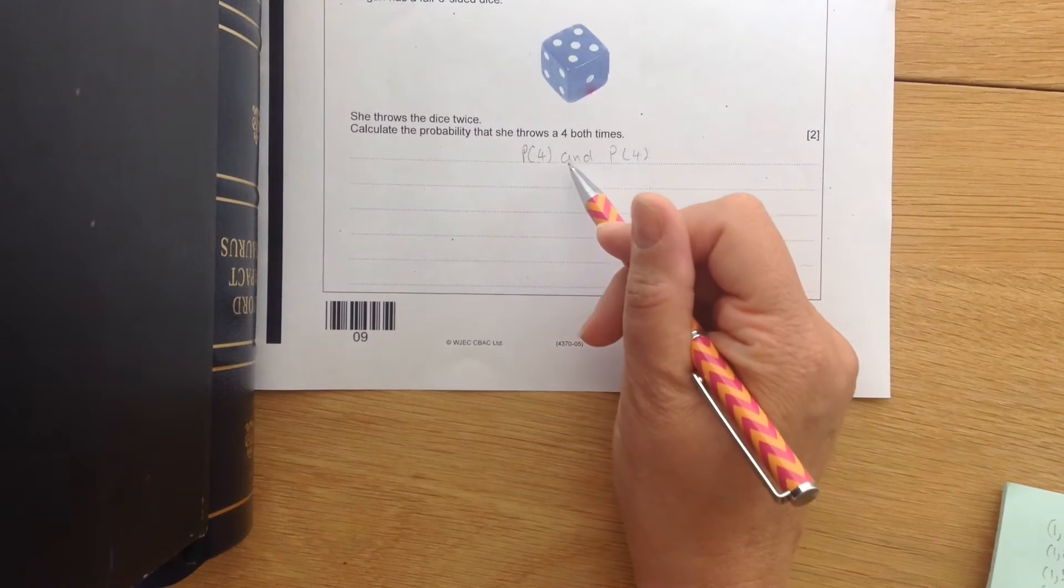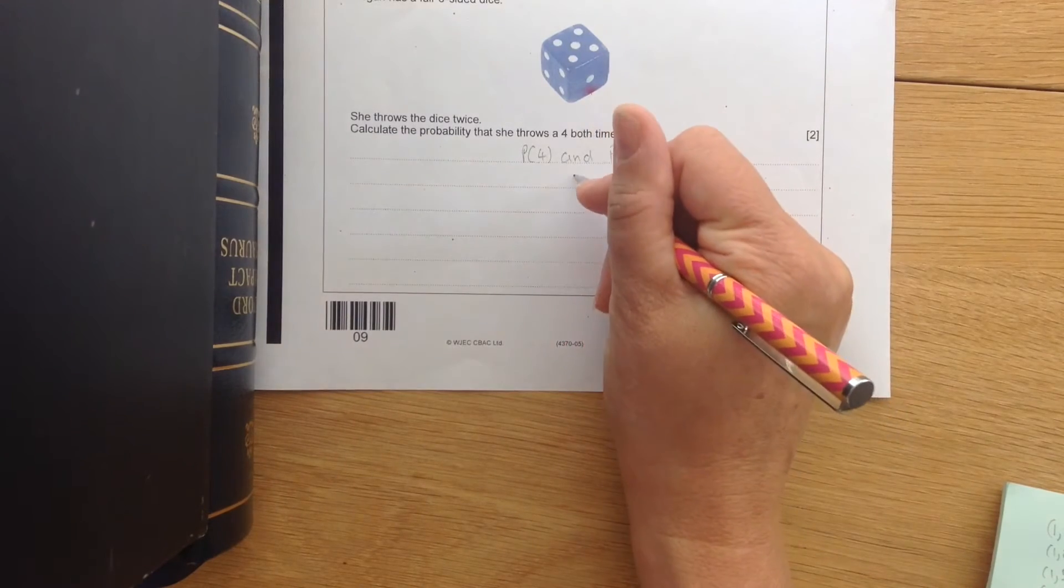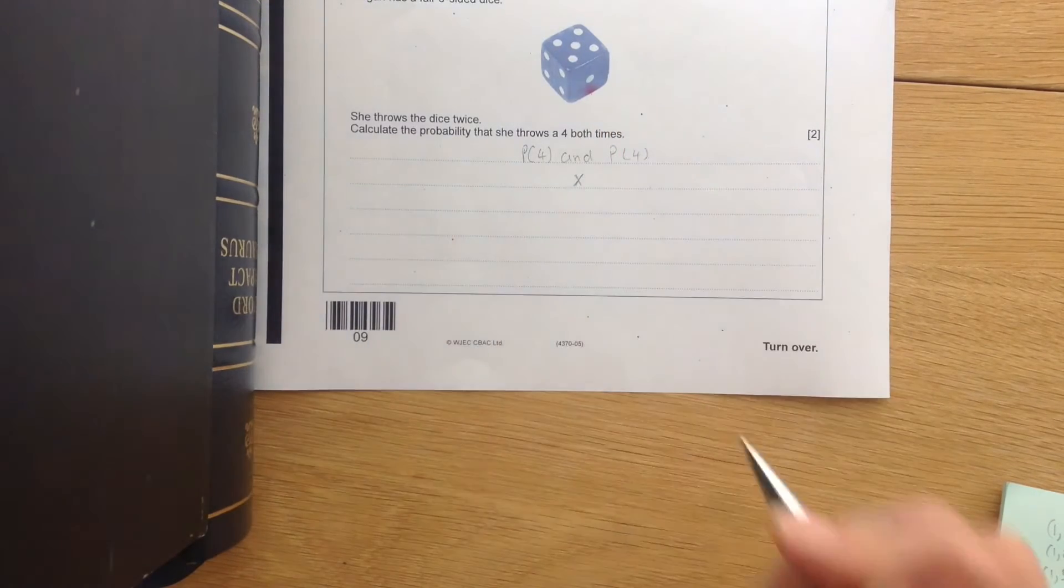Okay, now don't forget that in maths, when we're doing probability, the and rule means that and means multiply. We're going to multiply these two probabilities together.